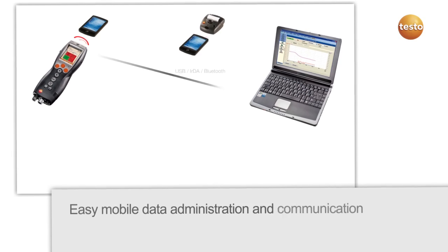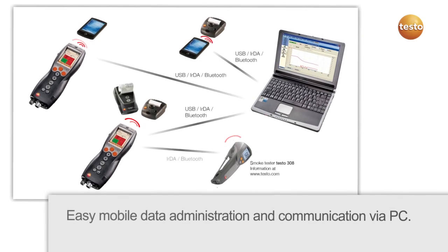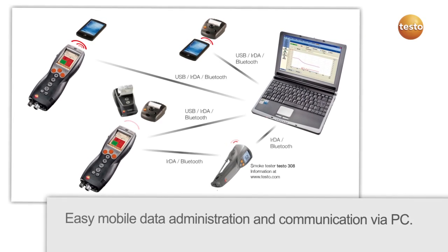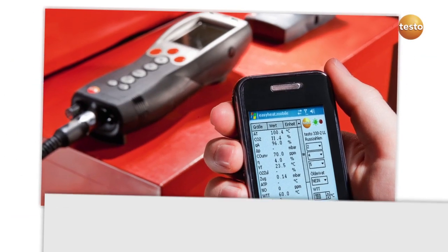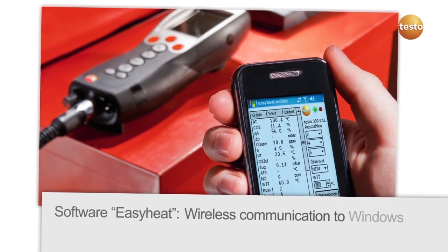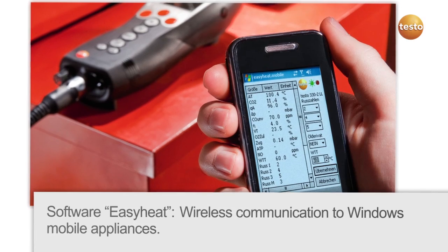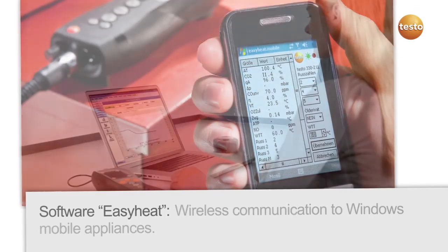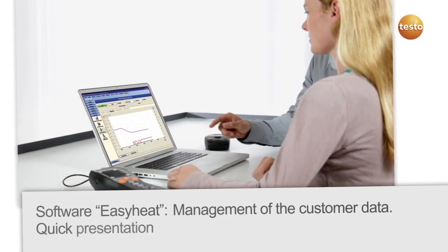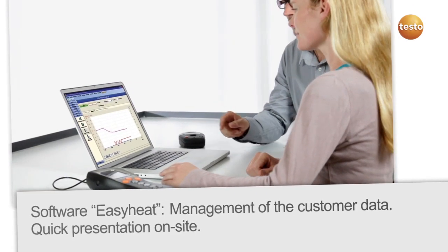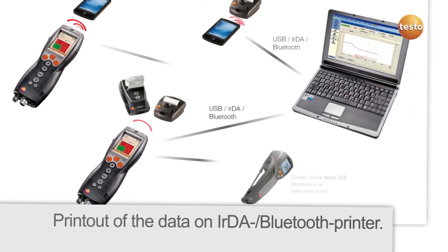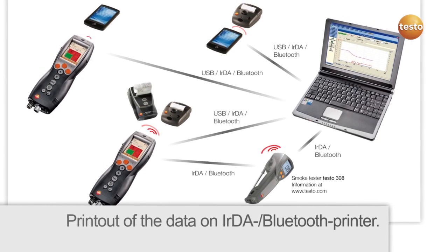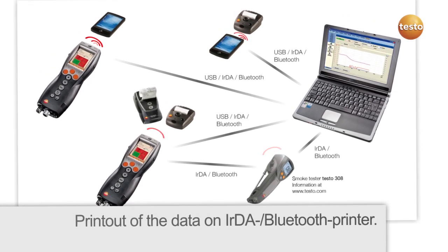The Testo 330LL communicates with PC and Testo 308 smoke testers. Software packages give you the possibility of adapting the Testo 330LL to your communication needs and enable the presentation of results for the customer. The printout of data from a PC or a pocket PC takes place directly via the IRDA or Bluetooth printer.